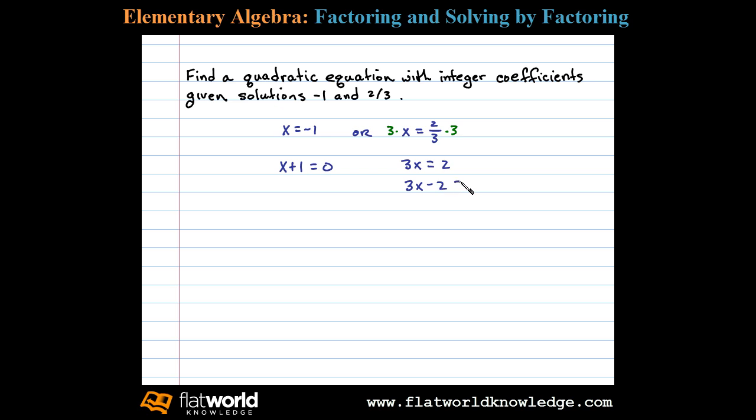The zero product property implies that if we multiply these together, (x + 1)(3x - 2), that'll be equal to 0 when x is -1 or when x is 2/3.